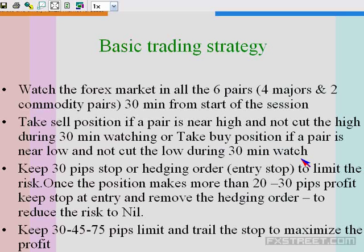Once the position is taken, you can fine-tune it by keeping a limit order about 2-3 pips below the current market level so it fills during a small swing. Or you can take a market position — it doesn't matter. You can keep about 5 pips below the market as a limit order to get a definite fill on a small swing. Once the position is taken, immediately keep a 30-pip stop — below for a buy position or above for a sell position — or a hedging order if the hedging facility is available in the platform, called an entry stop, to limit risk to about 30 pips.